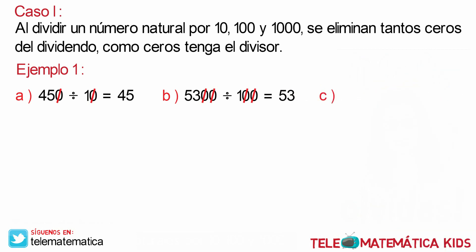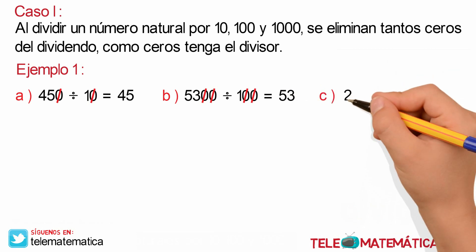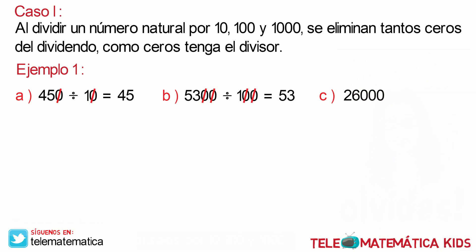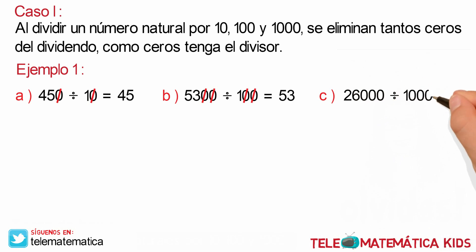Literal C: 26,000 dividido para 1,000. Simplificamos los tres ceros del divisor con los tres ceros de la derecha del dividendo y nos quedaría como resultado 26. Muy bien.